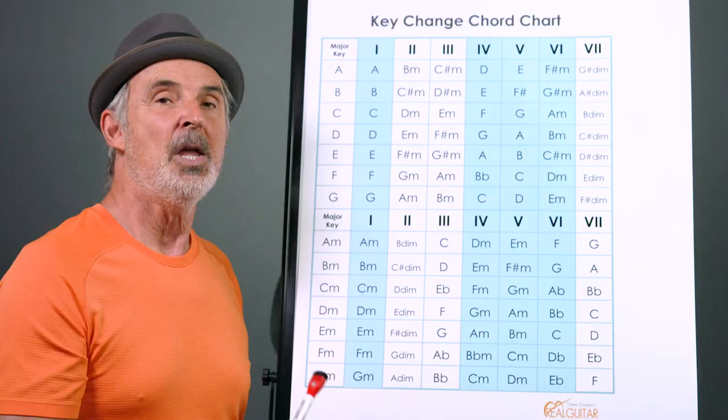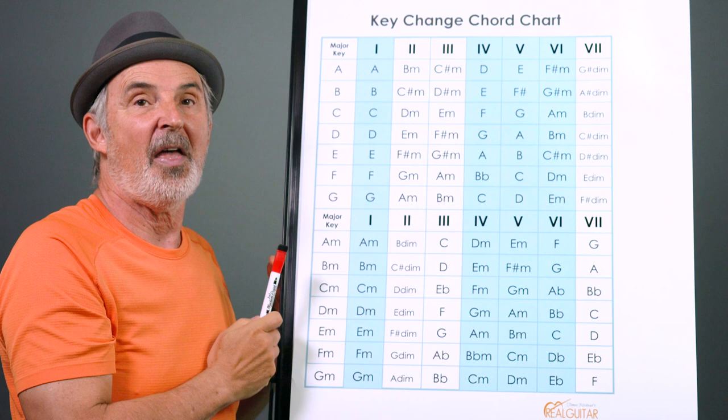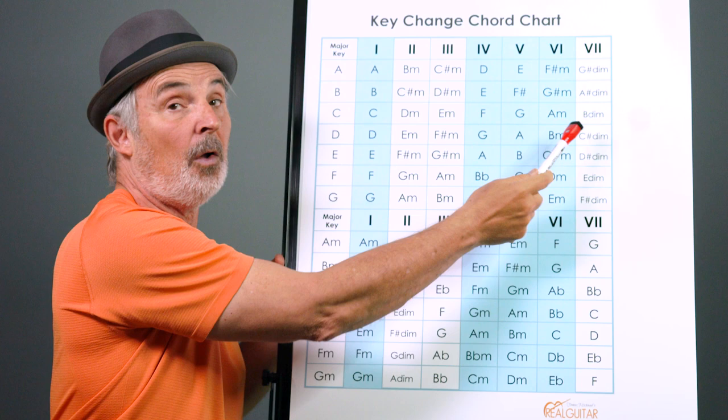So I'm going to explain first of all a little about the chart. This column has all the keys. This column is the number of the chord in that key. So for an example, if you had a C scale and you built a chord off C scale, the first chord number one would be C, second chord would be D minor and so on. Third chord would be E minor.